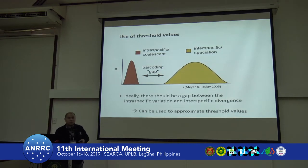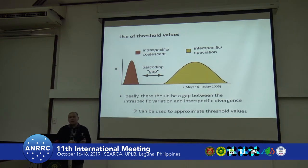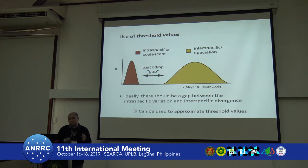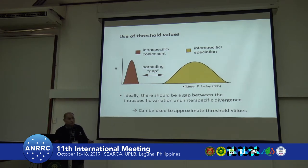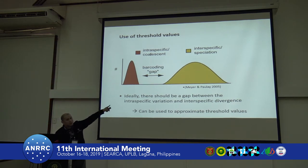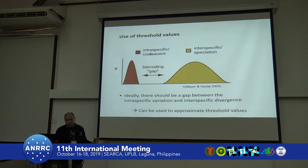This is very important because you want to establish a threshold value. A threshold value is something you use when, for example, you have an unknown individual, get its COI barcode, and try to look at its closest match. If the result says it's 97% identical to Homo sapiens, what does that mean? Is it indeed Homo sapiens or not? We have to establish a threshold value to know when to include a sample within a species group or when to exclude it. The maximum intraspecific distance should not overlap with the minimum interspecific distance, and with that we establish a threshold value.